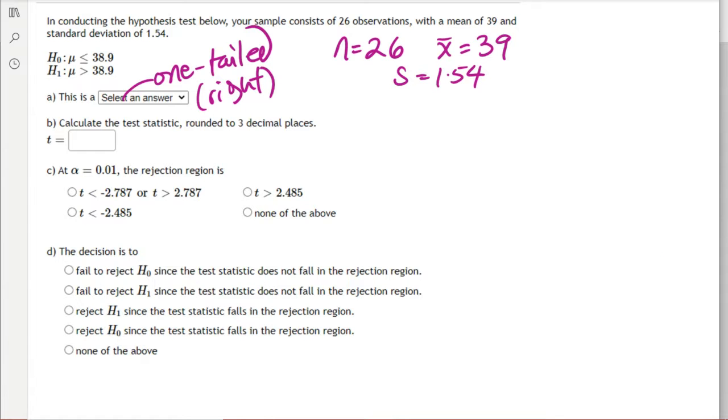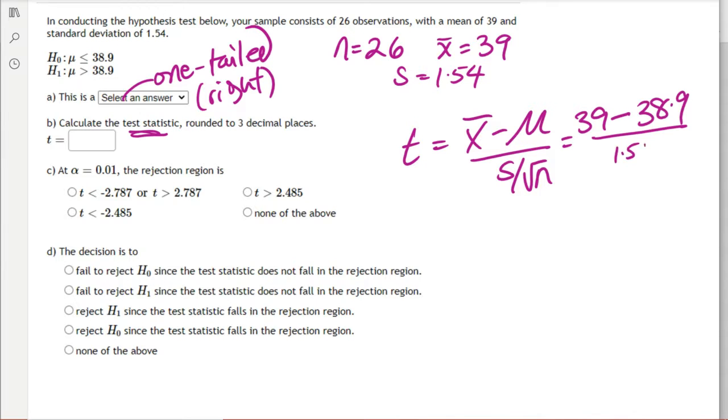That information is going to be required when we get to part C. The next question wants us to calculate the test statistic, and we have a formula for that, which is T equals X̄ minus μ over S divided by square root of N. So X̄ is 39 minus μ, taken from the null hypothesis, 38.9, divided by 1.54 over square root of 26. We're going to calculate that value, and that will be our test statistic.